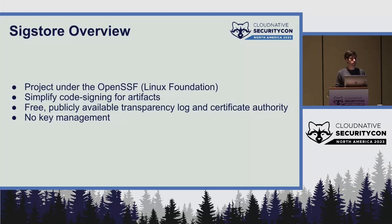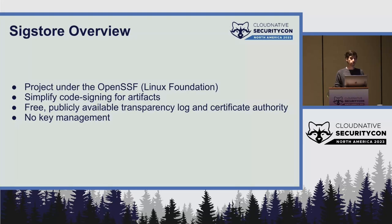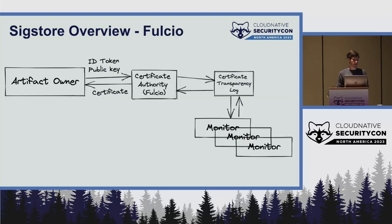SigStore aims to do the same, but focused on code signing. We enable this by providing free and publicly available transparency log and certificate authority services, which you can also run within your organization. One of its other goals is to remove the need to manage artifact signing keys. We found that this is one of the pain points for adoption when it comes to doing code signing — users frequently don't have signing keys or don't know how to manage them.